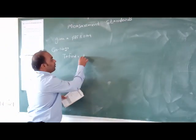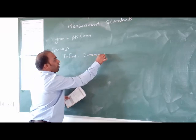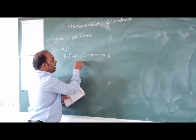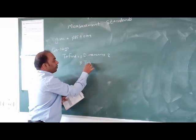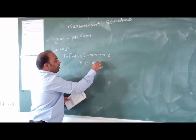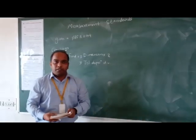What we have to find is first, dimensions of the gauge, and second, the tolerance deposition diagram.